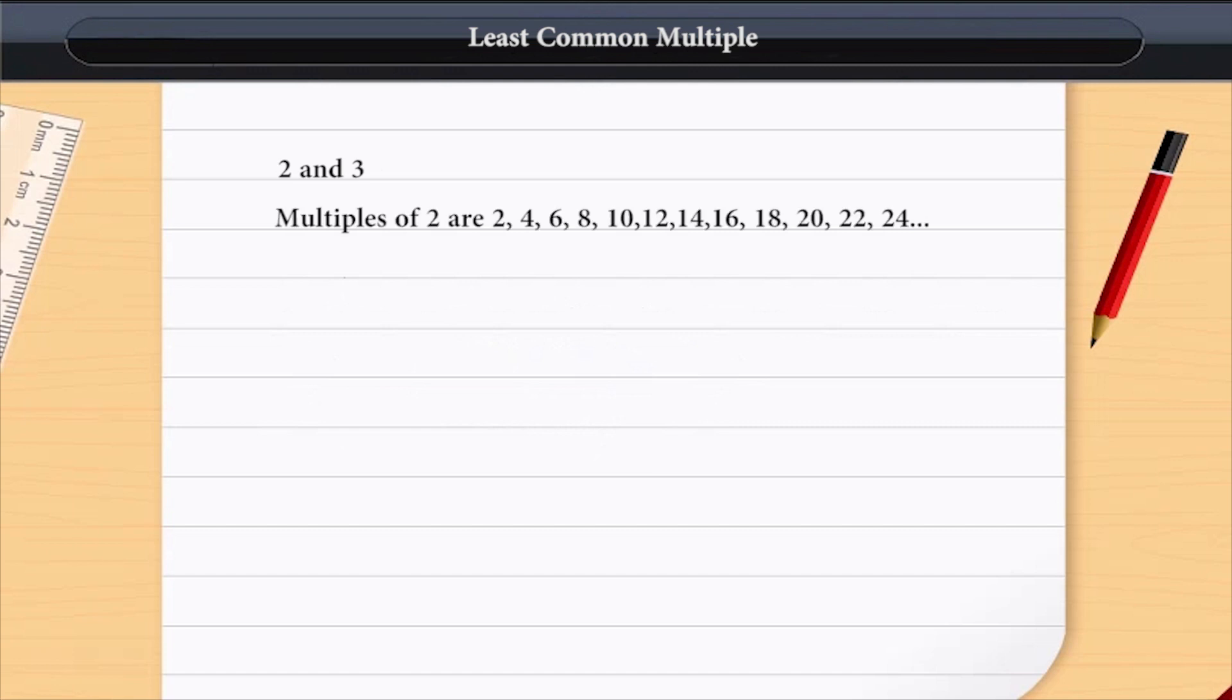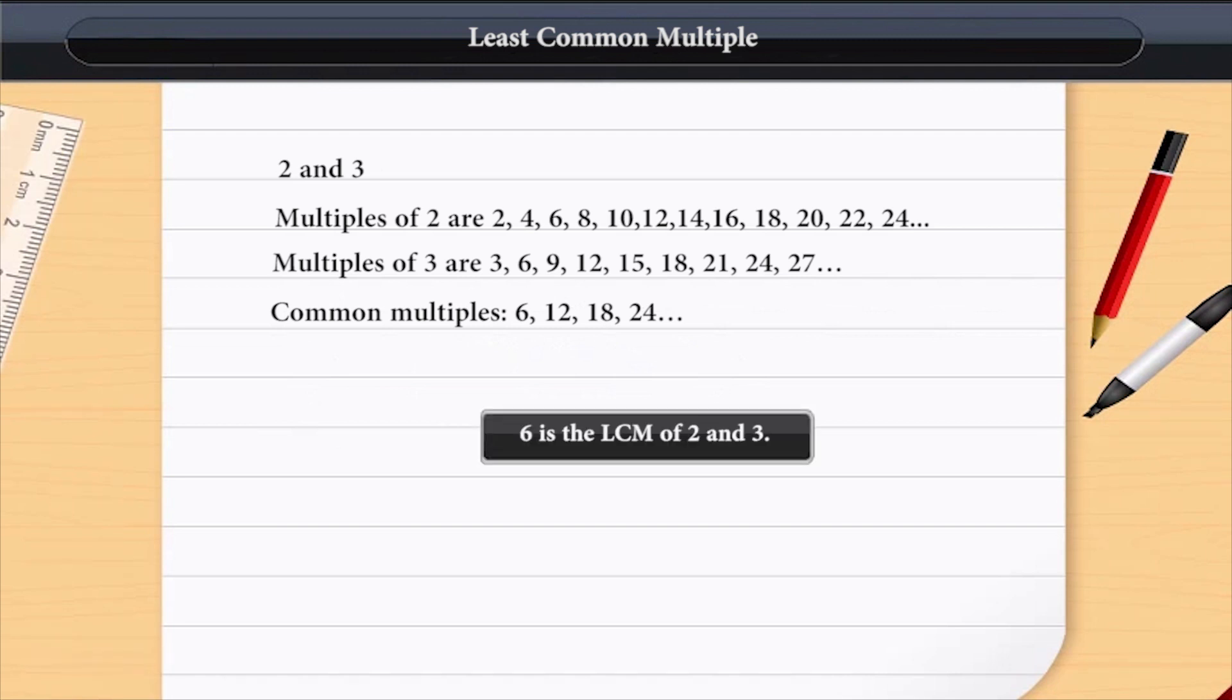Multiples of 2 are 2, 4, 6, 8, 10, 12, 14, 16, 18, 20, 22, 24 and multiples of 3 are 3, 6, 9, 12, 15, 18, etc. It is clear that 6, 12, 18, etc. are common multiples.